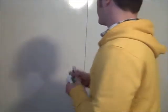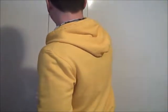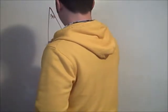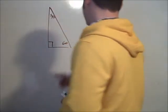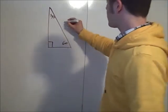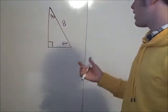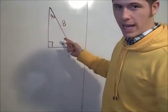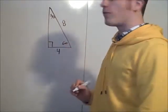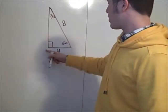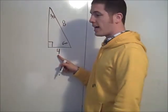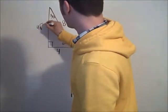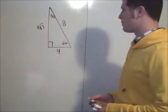Let's start with an easy example. Say we have a 30-60-90 where the hypotenuse is 8. The side across from the 30 is half the hypotenuse, so that's 4. And the side across from the 60 is the short side times root 3, so that's 4√3. That's it.